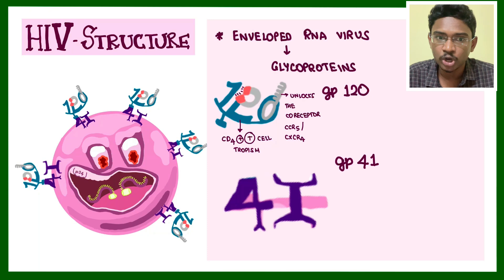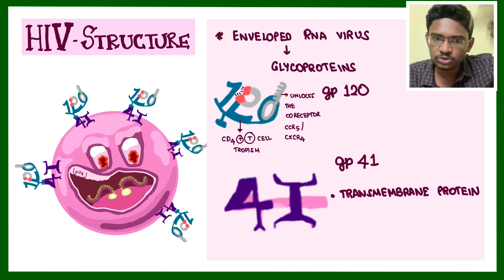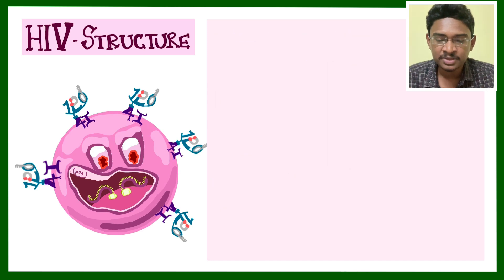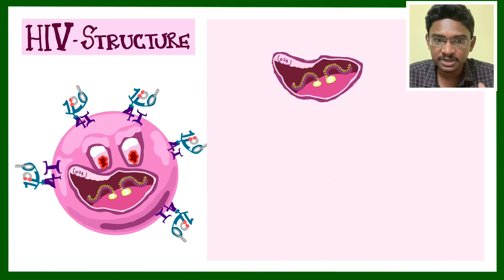GP41 is a transmembrane protein. It is present throughout and spans throughout the envelope of the virus.